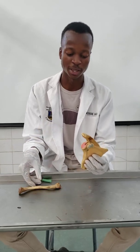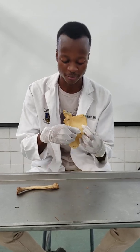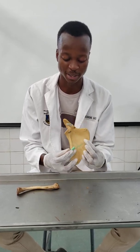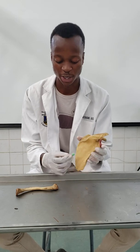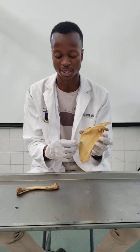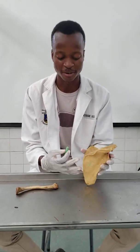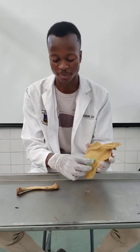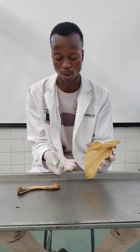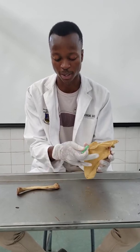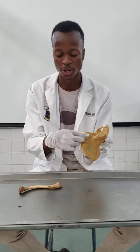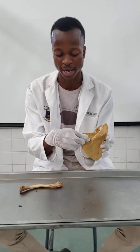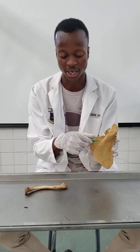To begin with, our scapula is going to have two surfaces. It's going to have a costal surface, and you're going to have a dorsal surface. The dorsal surface will be divided into two by a spinous process. So you're going to have an infraspinous fossa by virtue of being below or inferior to the spine of the scapula, and you're going to have a supraspinous fossa, which is going to be this region here.